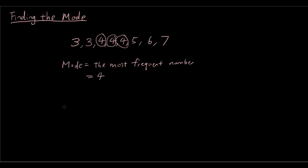Now you can also have two modes. In another case, let's say we have 3, 3, 3, 4, 4, 4, 5, 6. The mode can be 3 and 4. They're both modes.